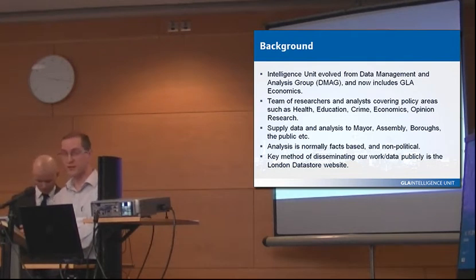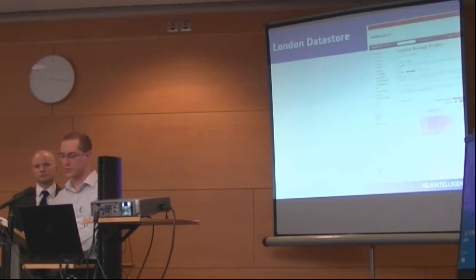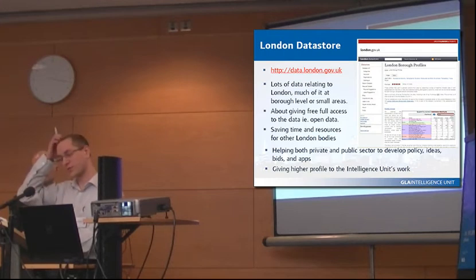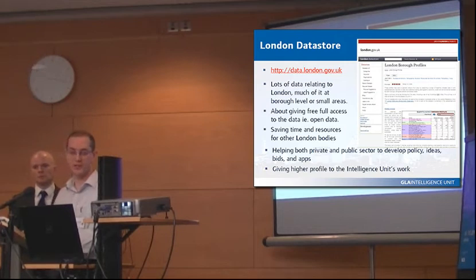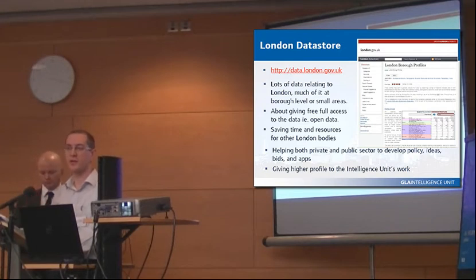Our key method of disseminating our data is called the London Datastore website. The Datastore has been open for just over two years — it opened in January 2010. There's a screenshot of one of the pages of the Datastore, and there's the URL as well. Basically, the Datastore has lots and lots of data relating to London. Most of it is at borough level or a smaller area level, such as wards, MSOA, and LSOA level. We're really catering for London boroughs and those planning at neighbourhood level.